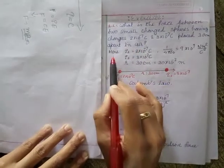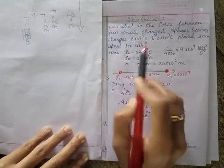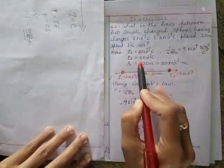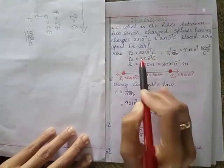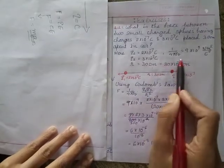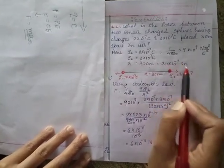So here I am taking q₁ equal to 2×10⁻⁷ coulomb, q₂ is equal to 3×10⁻⁷ coulomb, and the distance between them is given 30 centimeter. Convert into meter by multiplying by 10⁻² and this is the figure.